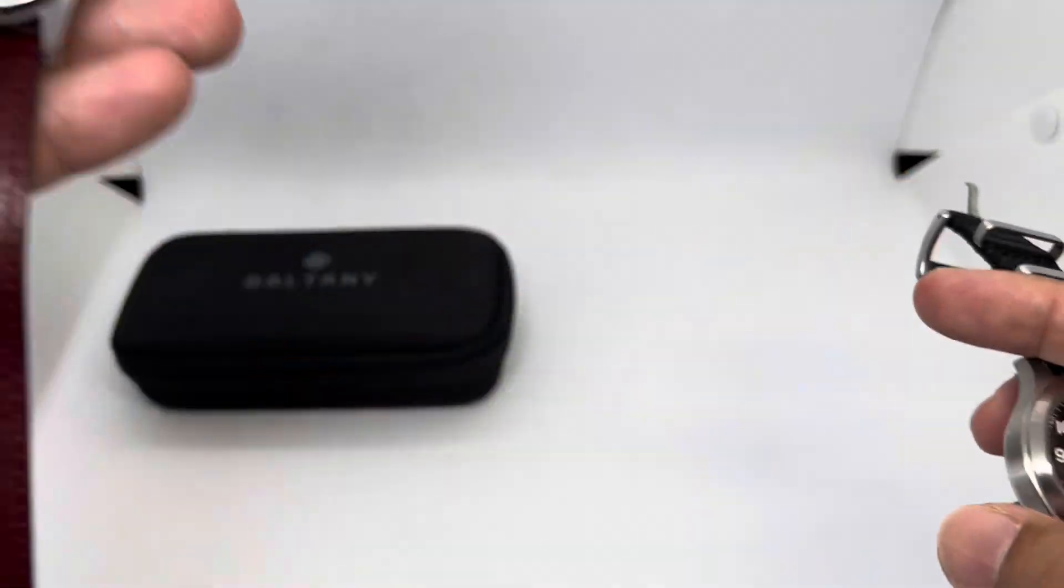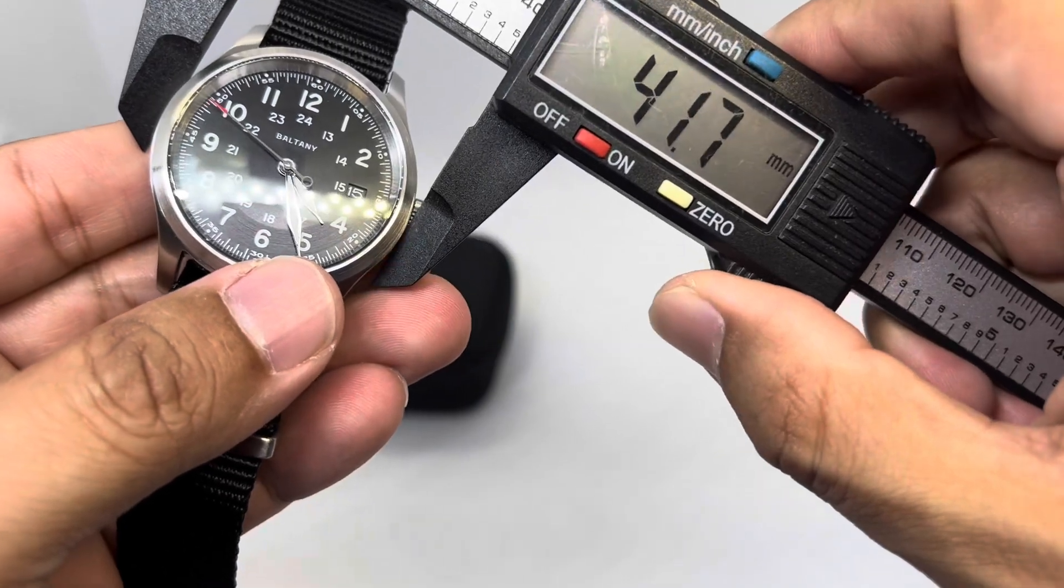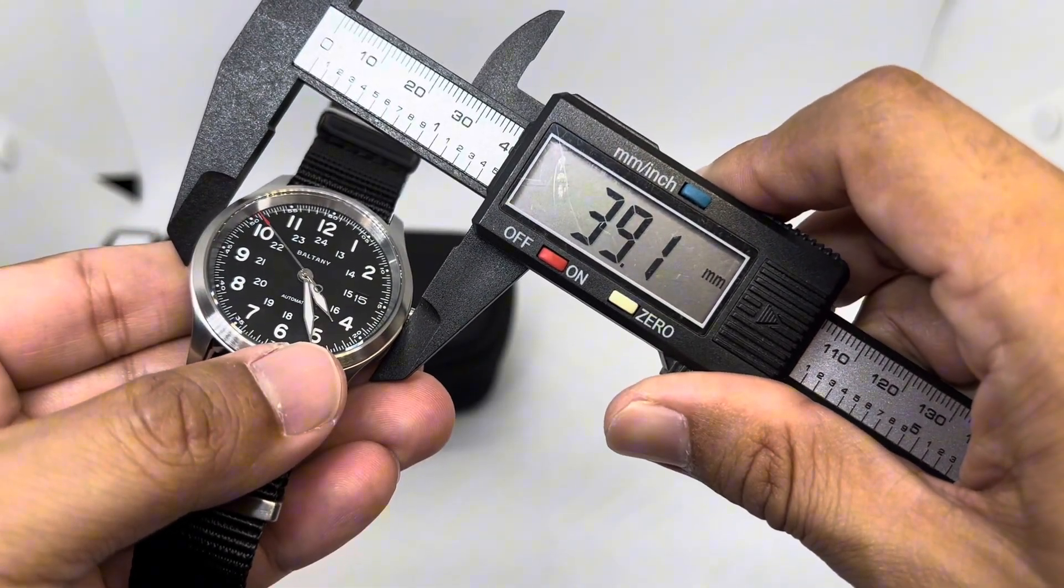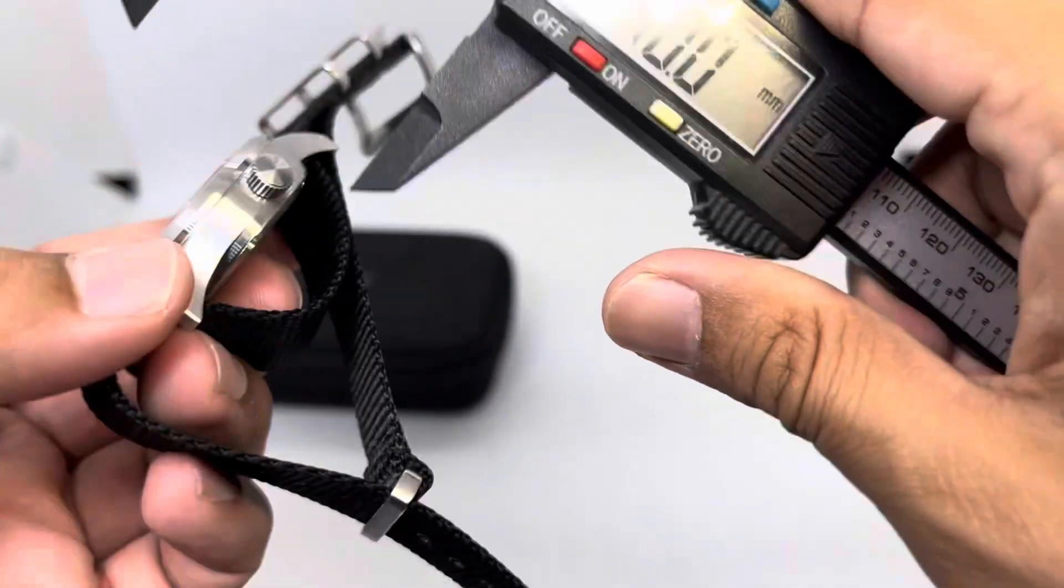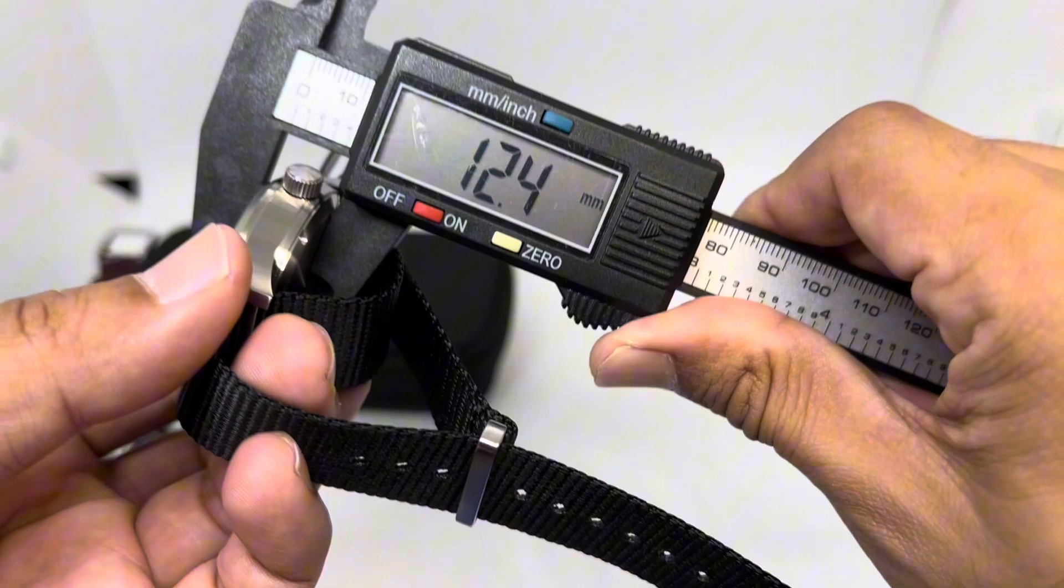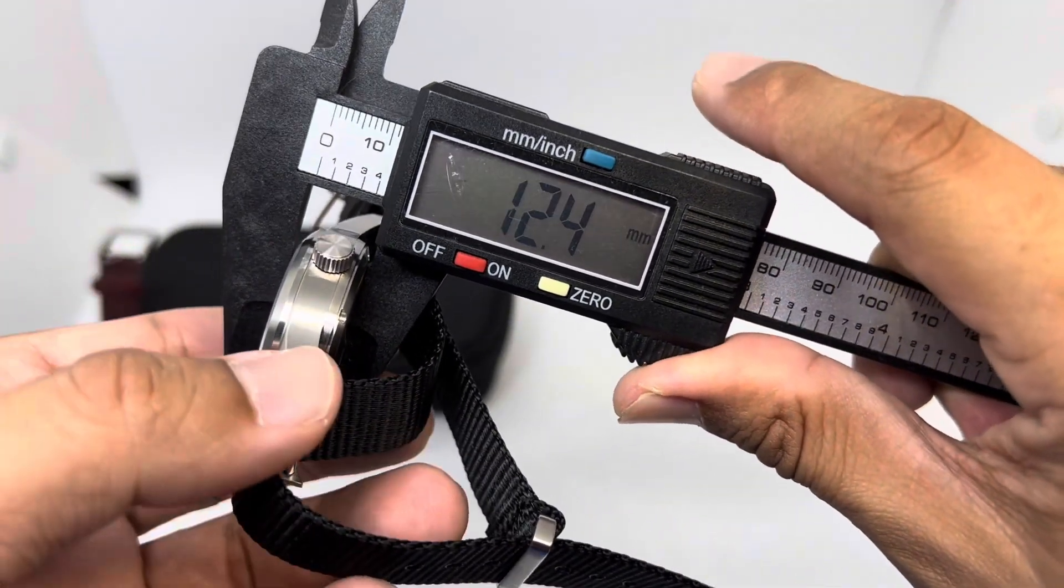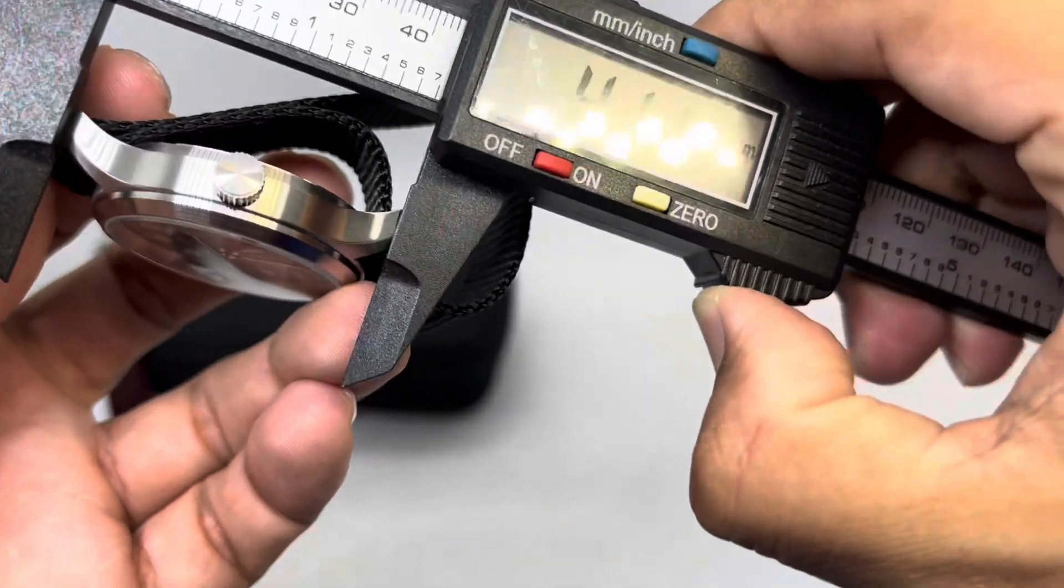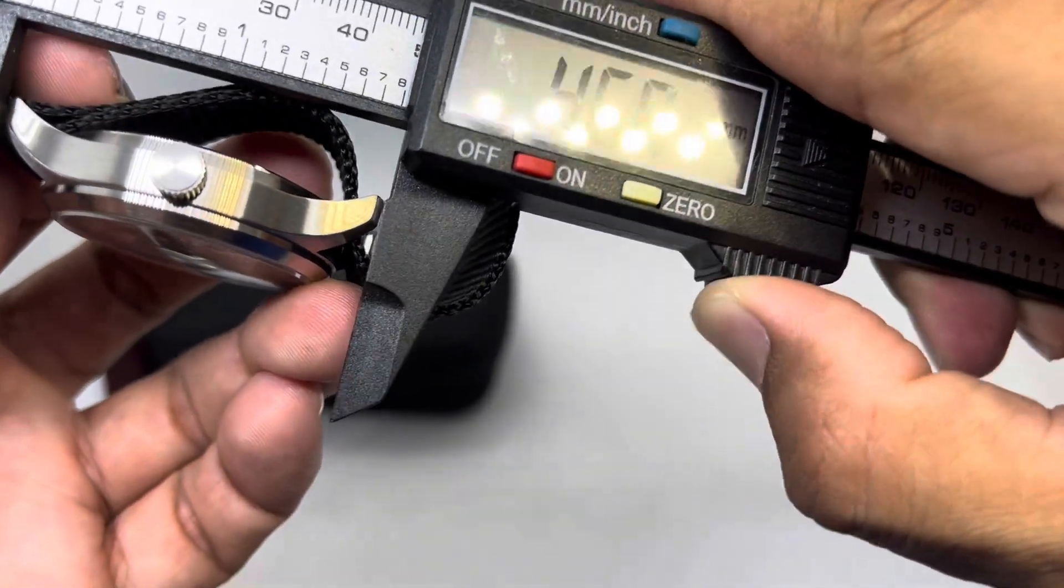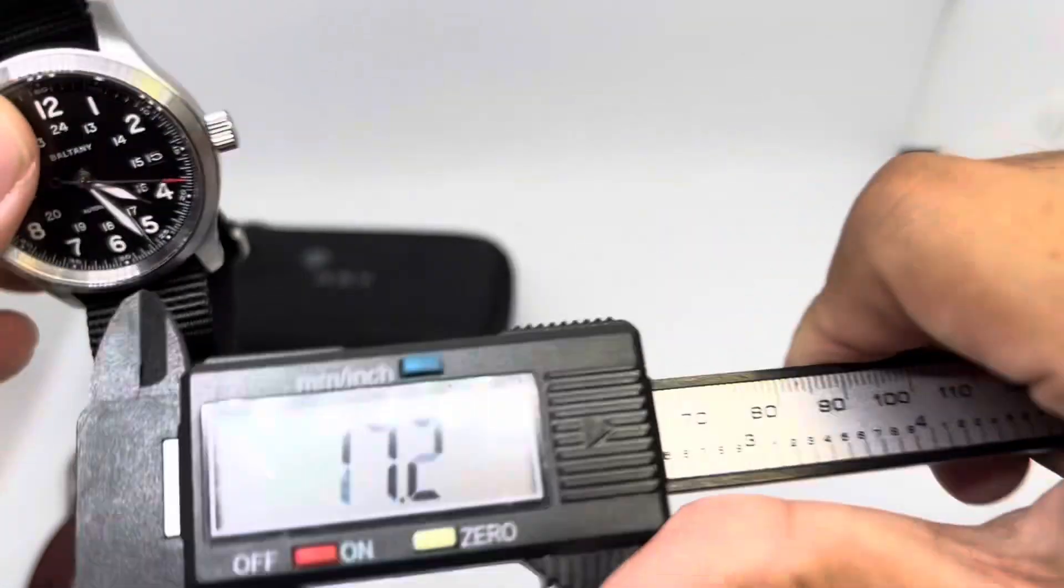Let's check the dimensions: 39 millimeters, while the Hamilton is 38mm - that is why it looks a bit bigger compared to the real thing. The thickness is about 12.3mm, which is also almost similar to the real thing. Good job Baltany, because you have managed to reduce the thickness of your watch here.